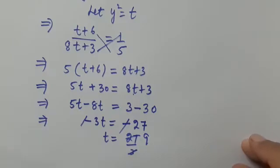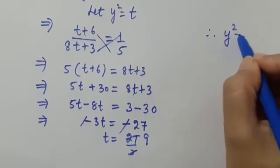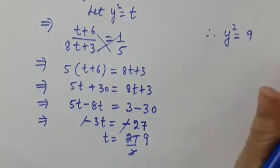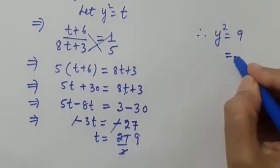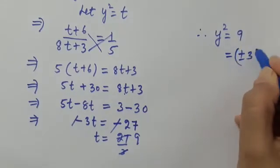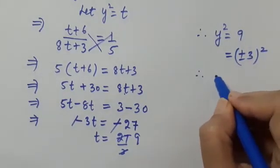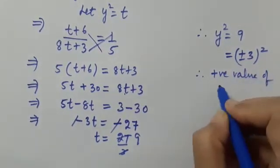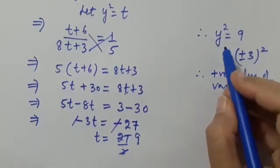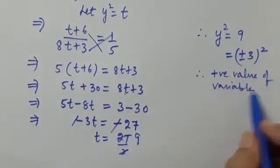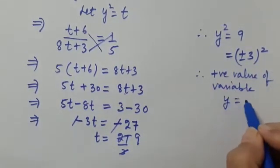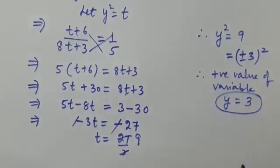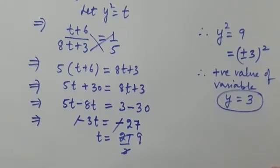Again, we need to find the positive value of the variable. So y² = 9 = (±3)². Therefore, the positive value of variable y is equal to 3. The answer to the second part is y = 3.